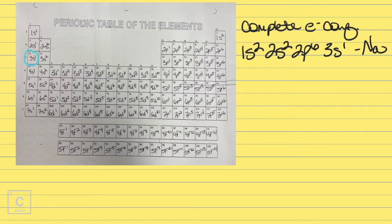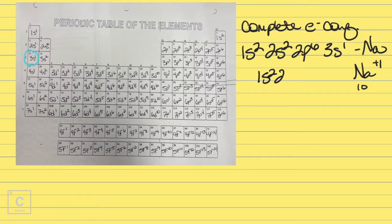Remember this was for sodium. What if we look at the ion sodium⁺? Sodium is in group 1, so sodium is a +1. That means it's going to have 1 less electron than normal — we're not going to have that last electron. Na⁺ has 10 electrons, and so we would go all the way up to 10, which would only be 1s², 2s², 2p⁶.